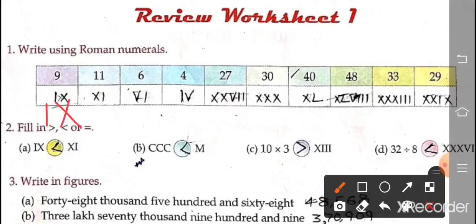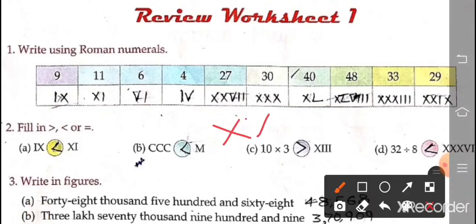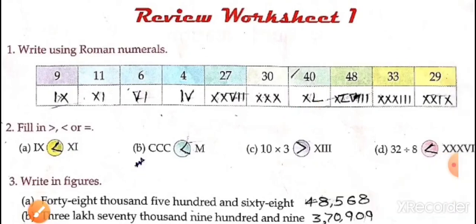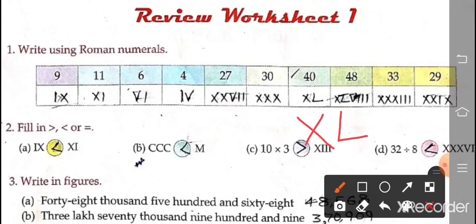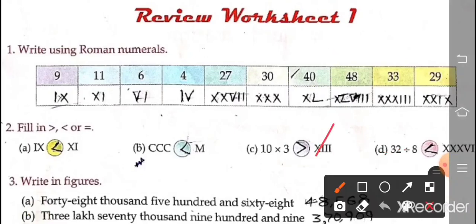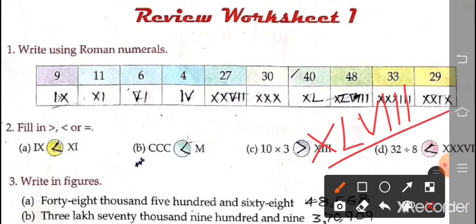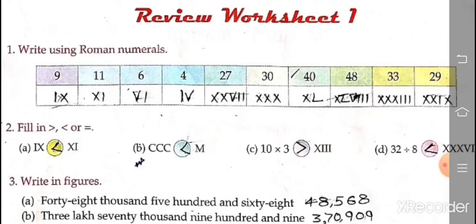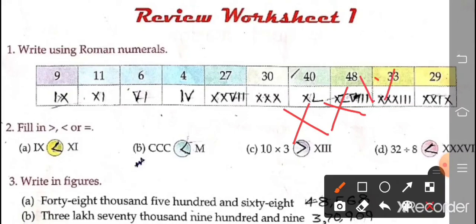For 11: XI. For 6: VI. For 4: IV. So like this you have to write. For 27: 10 is X, 20 is XX, 25 is XXV, 26 is XXVI, and 27 is XXVII. For 30: 10 is X, 20 is XX, 30 is XXX. For 40: 50 is L and 40 is ten less than 50, so it is XL. For 48: XL is 40, so 45, 46, 47, 48 — XLVIII. For 33: 10, 20, 30, 31, 32, 33 — XXXIII. For 29: 20 is XX and 9 is IX, so 29 is XXIX.